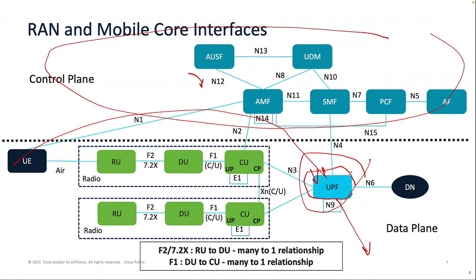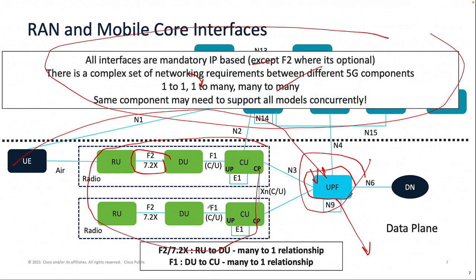What this diagram is showing is the RAN part of the network. What is important is all these interfaces are IP — all of them — except for the DU front-haul interface, which is L2 today. IP is the way to go because all the standards have evolved to IP.